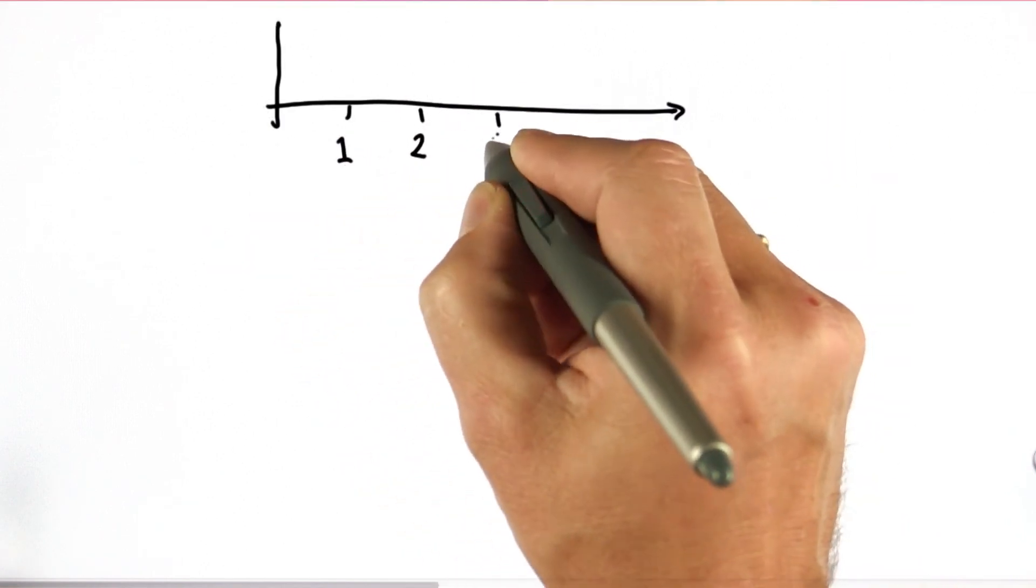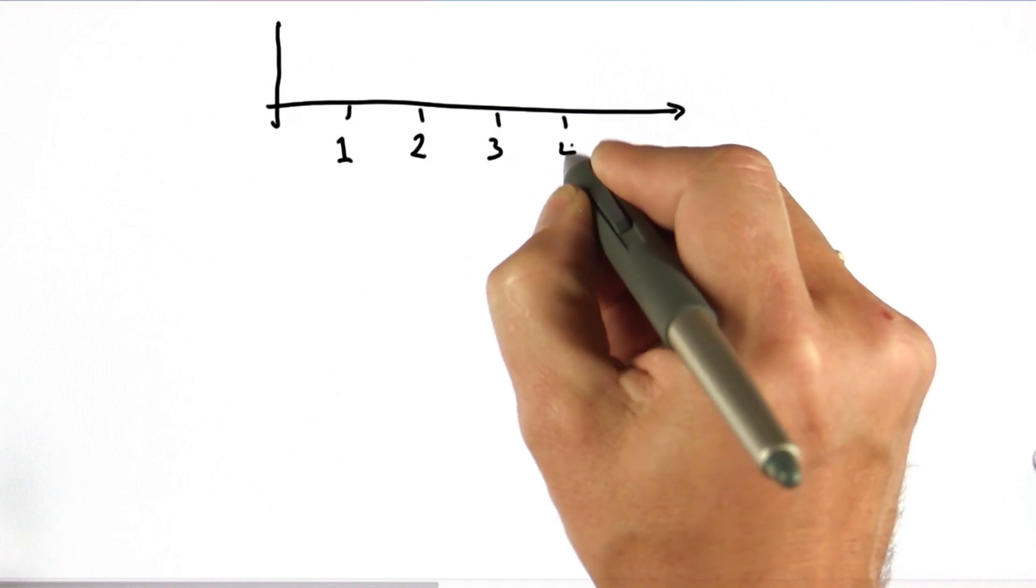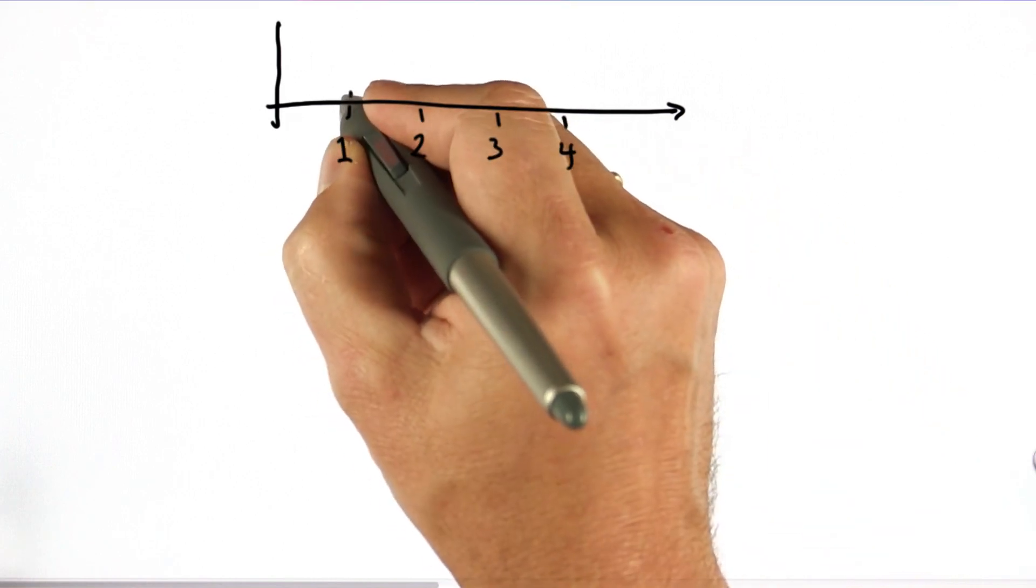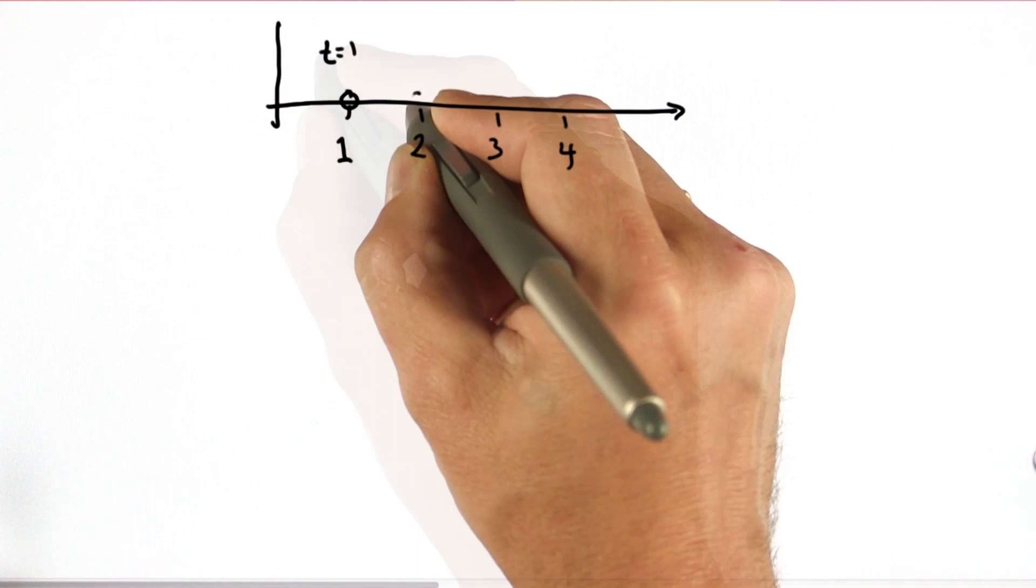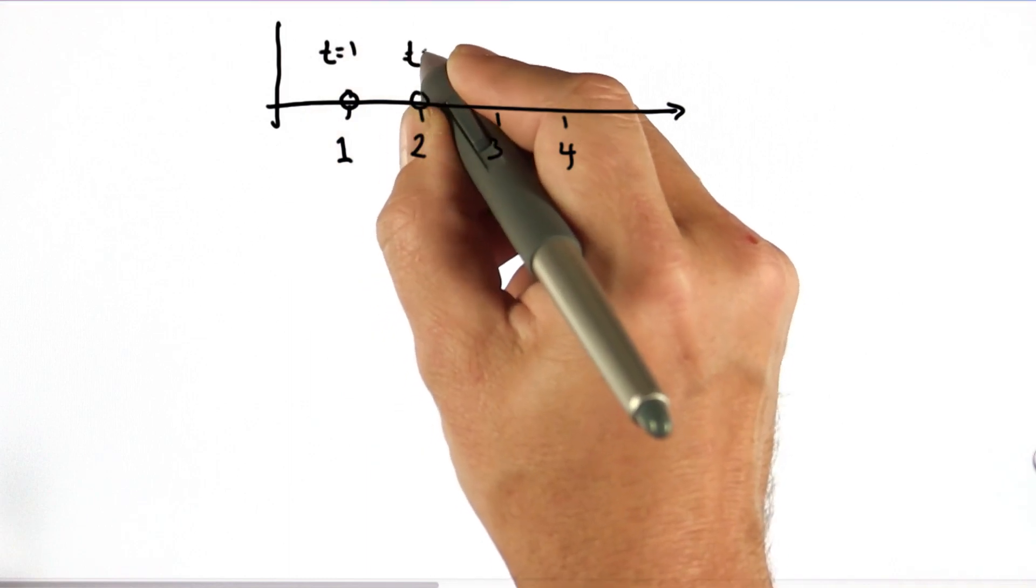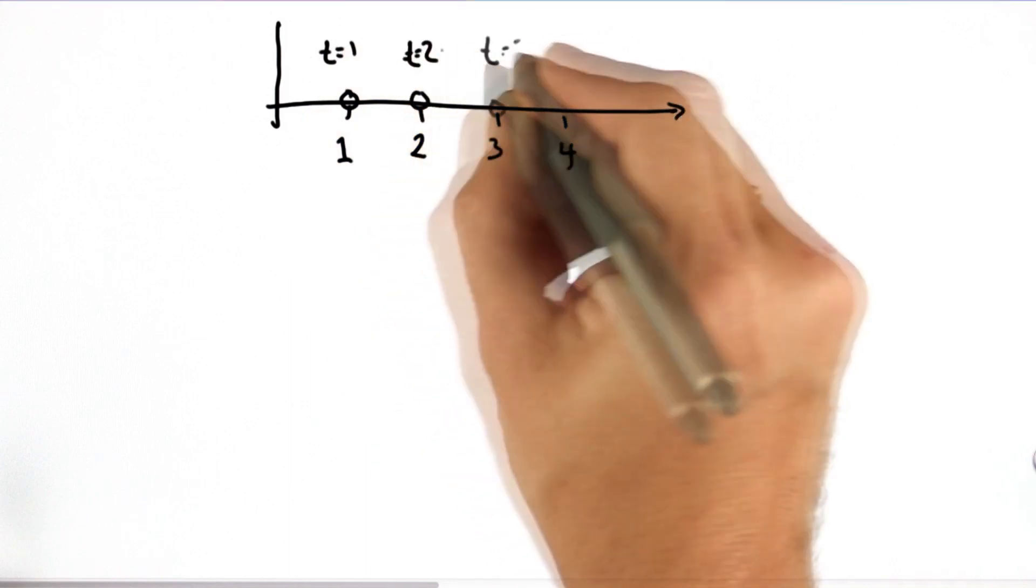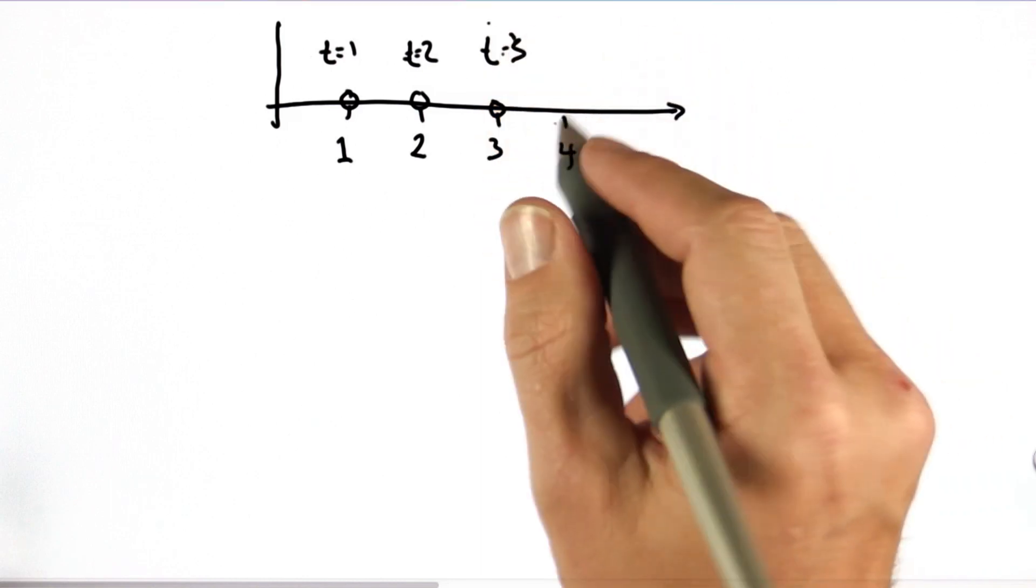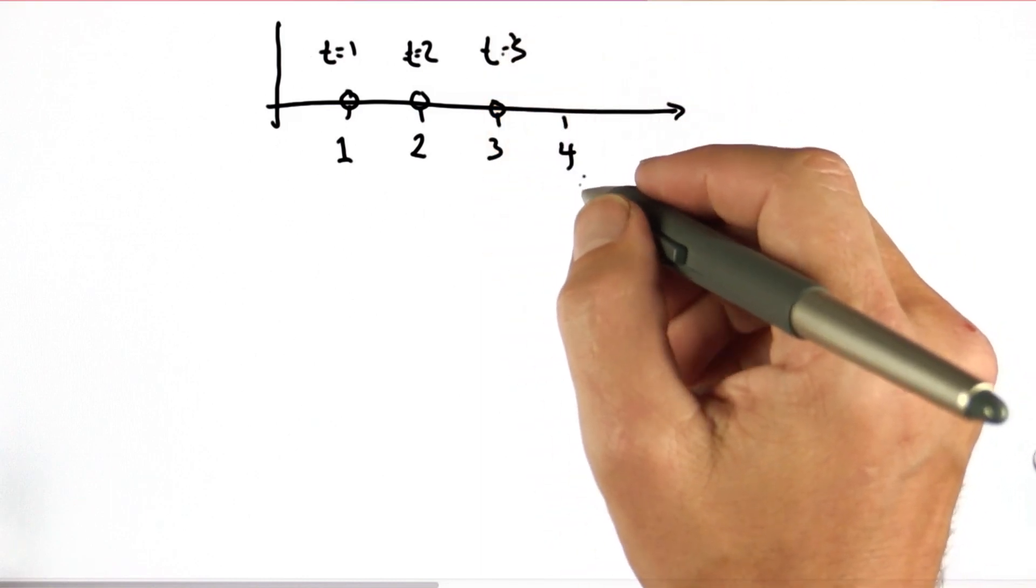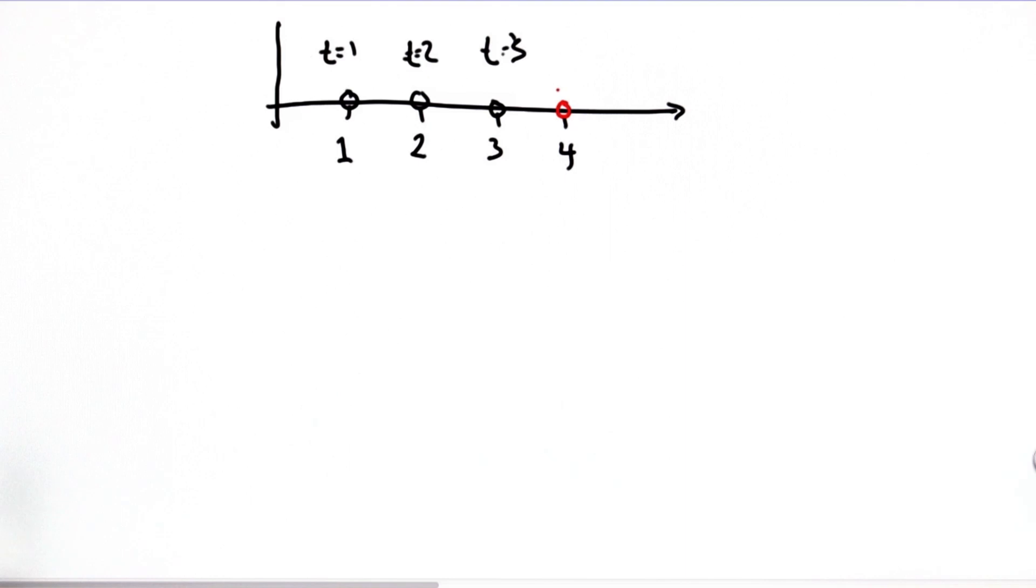The problem I'm going to choose is a one-dimensional motion example. Let's assume at t equals 1 we see our object over here, at t equals 2 right over here, at t equals 3 over here. Then you would assume that at t equals 4 the object sits over here.